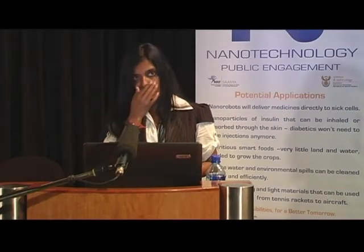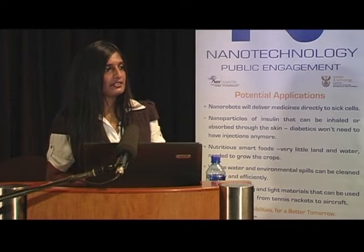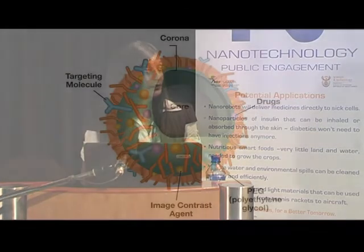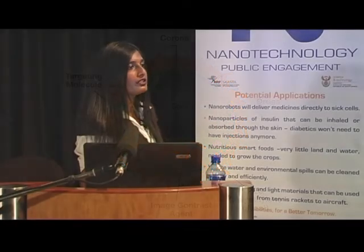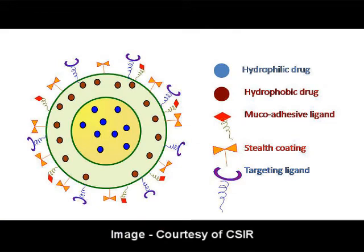A polymeric nanoparticle is defined as a particulate dispersion or solid particle with a size ranging from 1 to 1000 nanometers. You get the nanosphere — the matrix type — where the drug can be absorbed on the surface, within the particle, or dissolved inside. You also get nanocapsules, which are multi-functional nanoparticles with a shell and a core. The drug can be placed inside the core or absorbed on the surface, and ligands can be attached to target specific cells in the body — that's where targeting comes in.